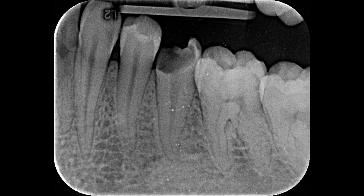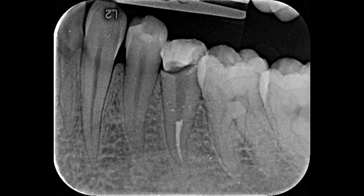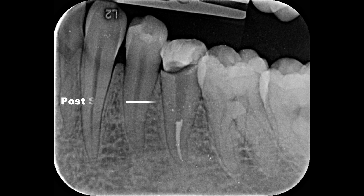This is the preoperative radiograph of the tooth where you can see the decayed second premolar — most of the tooth structure is lost till the bone level. I worked on that tooth, completed my root canal treatment, and created the post space. Here is the radiograph where you can see the beautiful apical seal by Gutta Percha at the apical third and the nicely created post space.